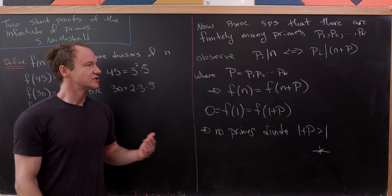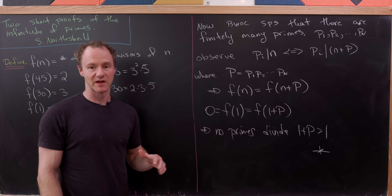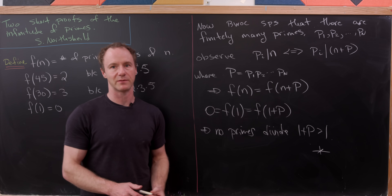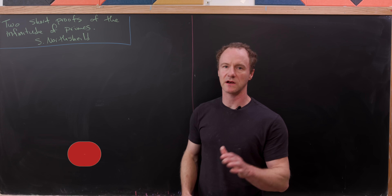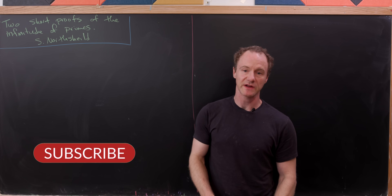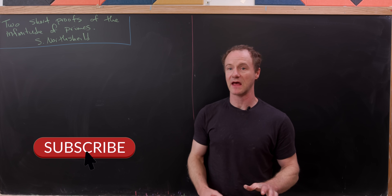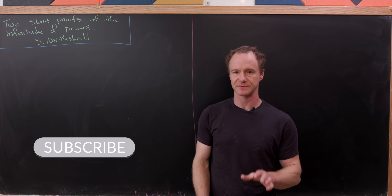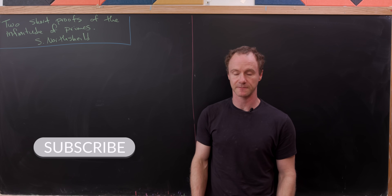We've contradicted the assumption that there were only finitely many primes, meaning there are infinitely many primes. Now let's look at one more proof — a probabilistic one. If you're enjoying the video, give it a thumbs up and consider subscribing.